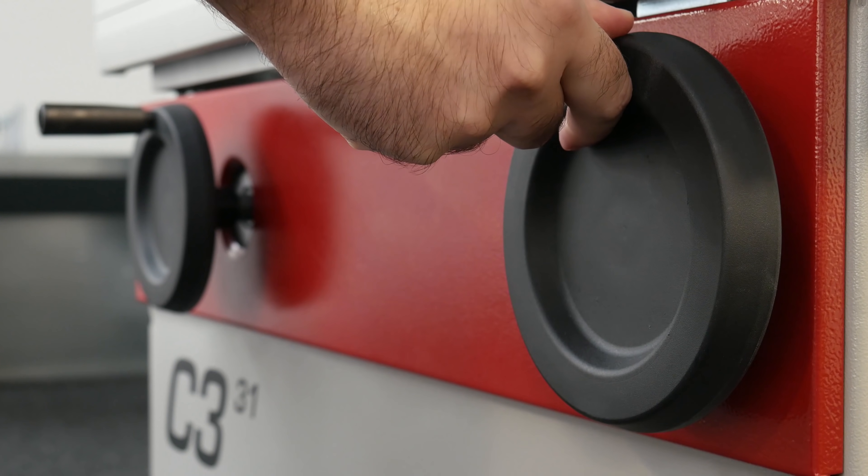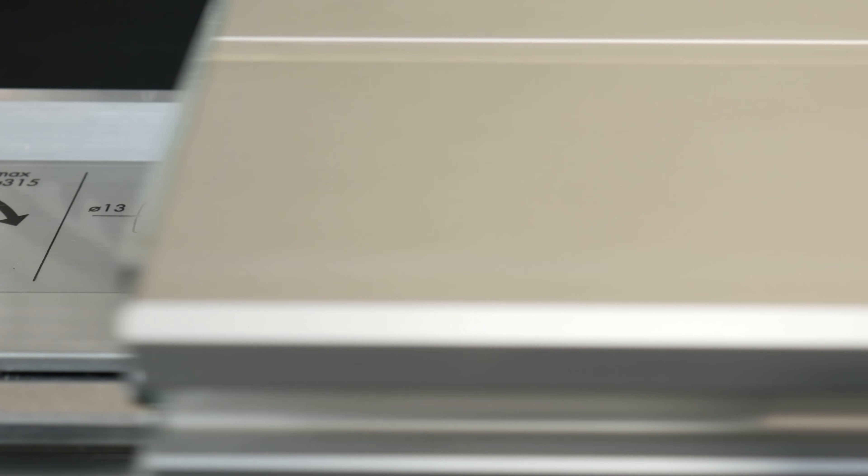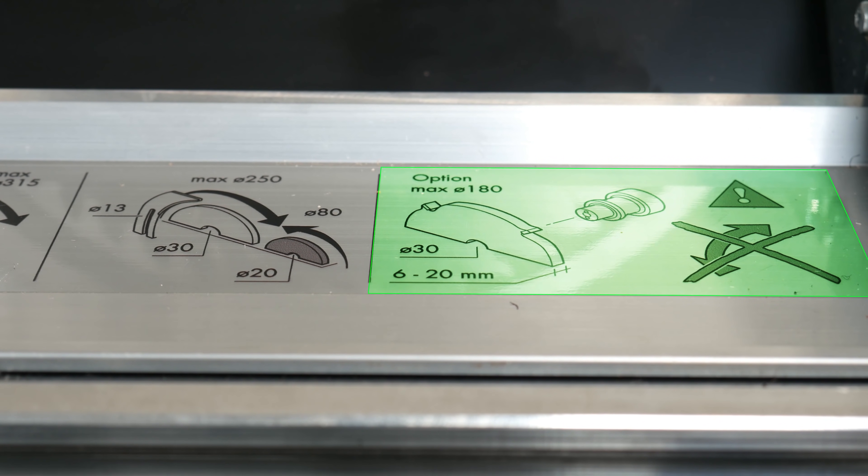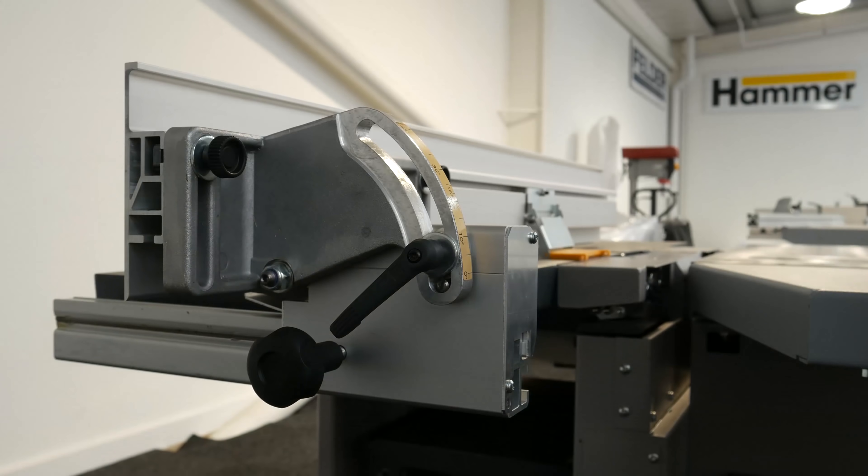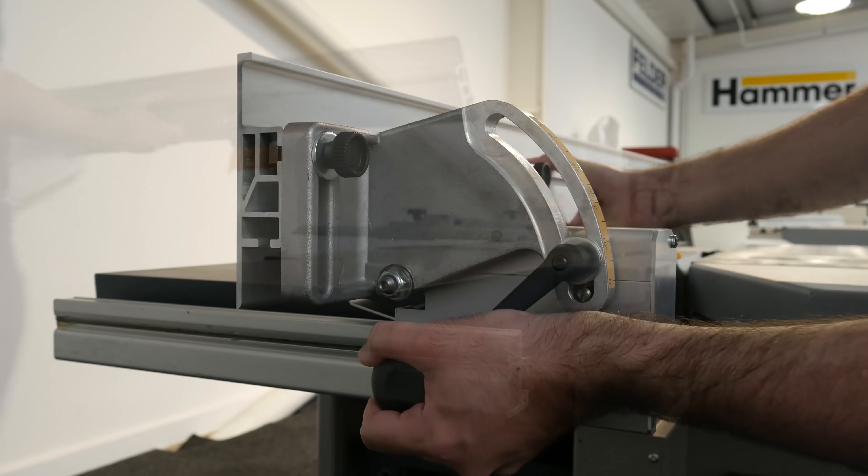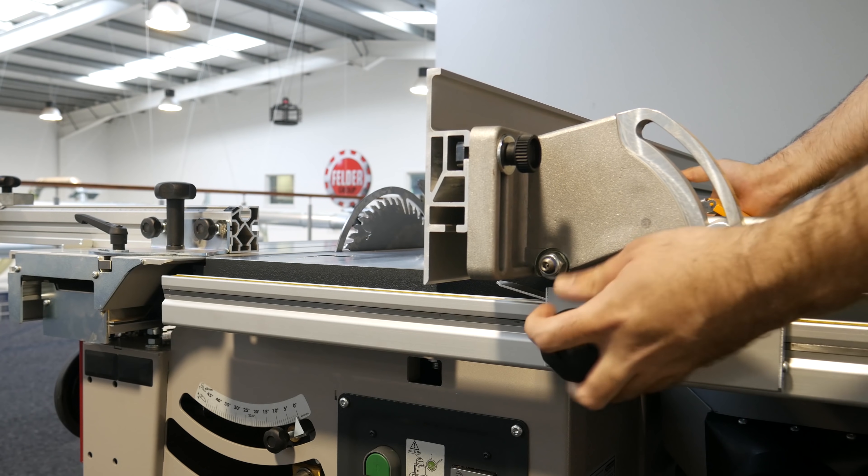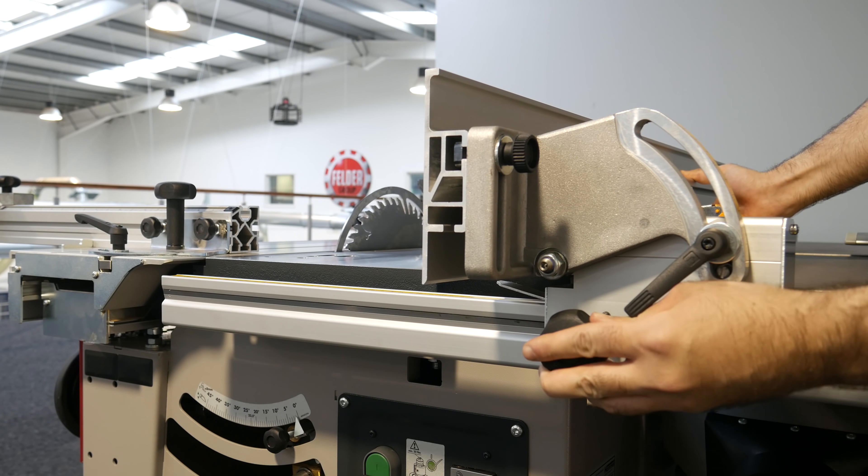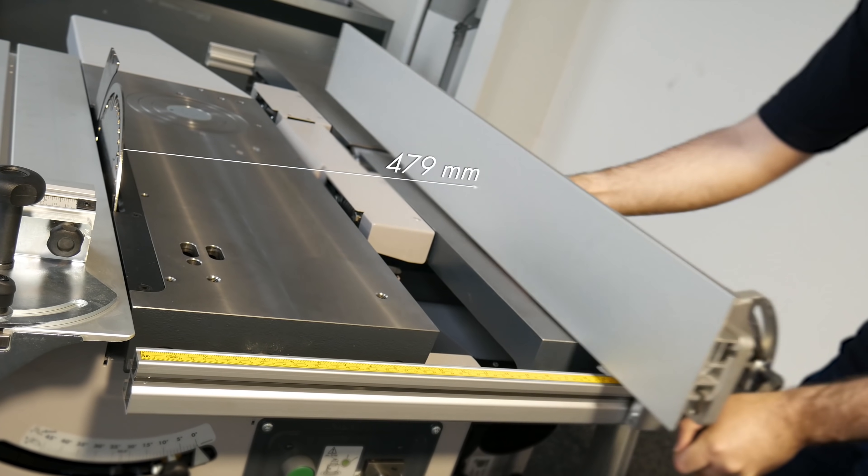The C331 can be further tailored to your requirements with the options of dado tooling preparation for slots and grooves and a mechanical scoring unit for laminate processing. The tiltable planer fence is easily repositioned to double as the saw's rip fence and offers a continuously adjustable rip capacity from 0 to 600mm.